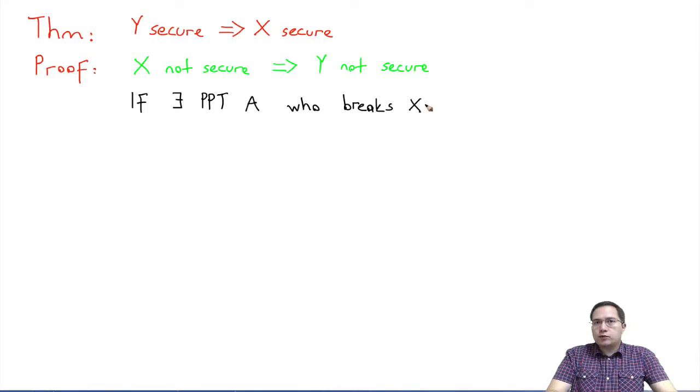The proof will start by assuming there exists some adversary A. We don't know how A works, we don't know A's code, but we know that A breaks X.